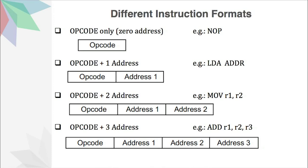The second type is where we have an opcode plus one address. If you look at the slide here, we can see that one part is the opcode and the next part we have the first address. An example of this type of instruction would be LDA — that is, load direct accumulator — and then we have the mention of a particular register, here it is ADDR. This instruction means we need to load whatever was in the memory location of ADDR into the accumulator.